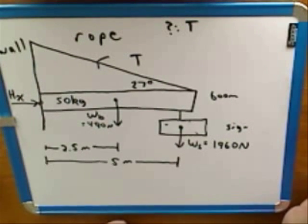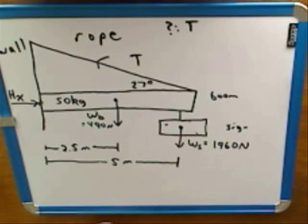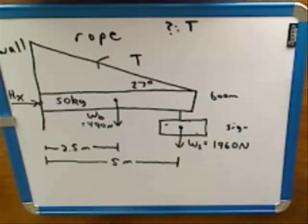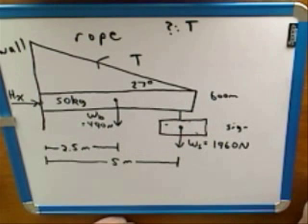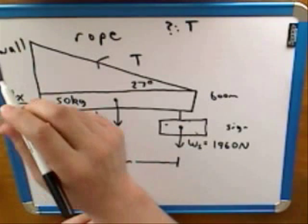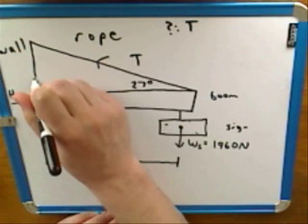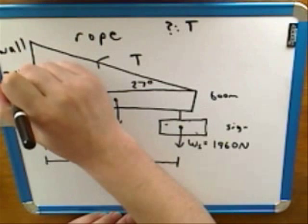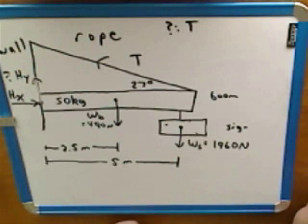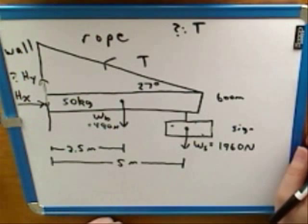We also have a vertical component. It's not really obvious in this case whether the vertical component should be up or down — we pretty much have to take a guess, because there are some downward forces and an upward force here. What would be your guess as to what the direction would be? I think it would have to be up, to keep the boom from dropping down, to keep it horizontal. So we'll take a guess that the hinge force is up.